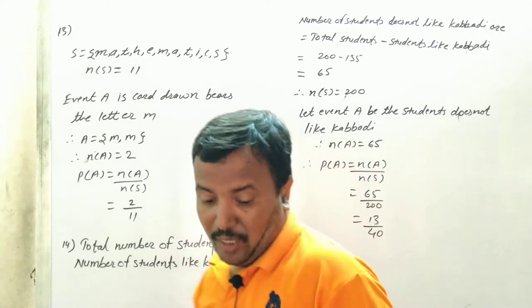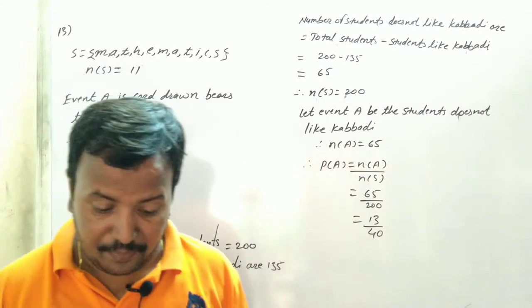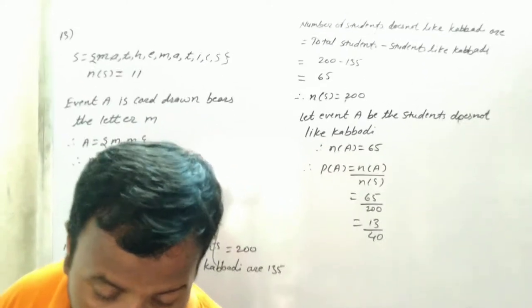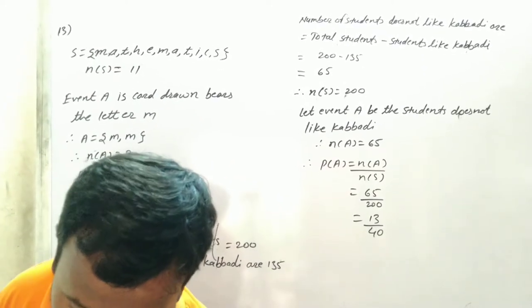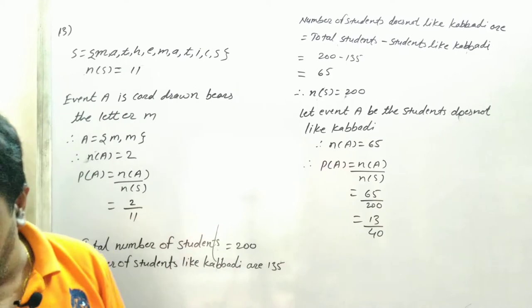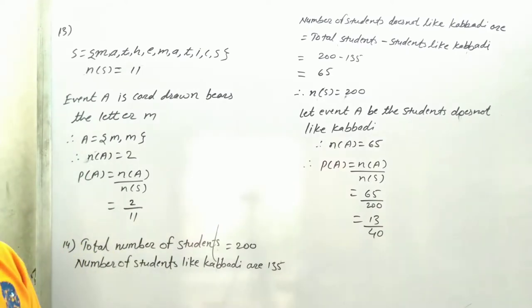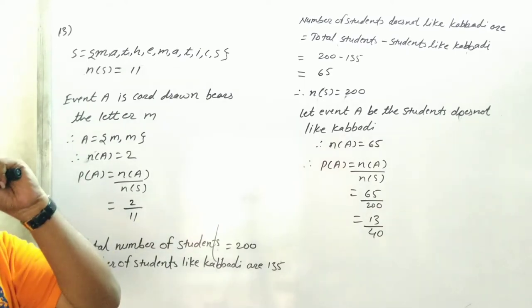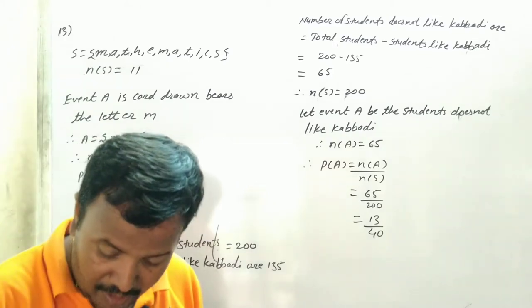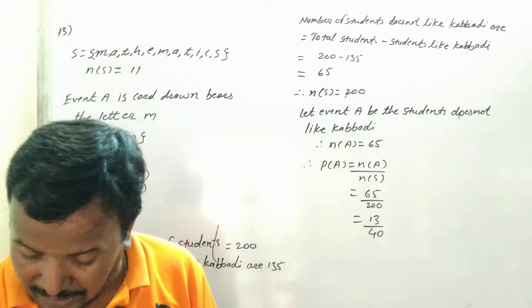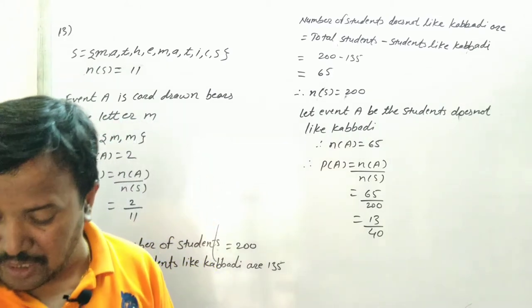Now next one is, next question is question number 13. Each card bears one letter from the word mathematics. The cards are placed on a table upside down. Find the probability that a card drawn bears the letter M.